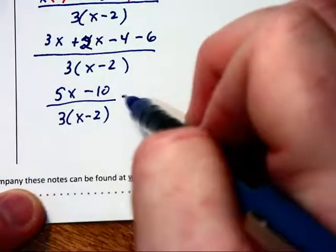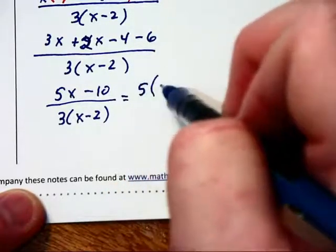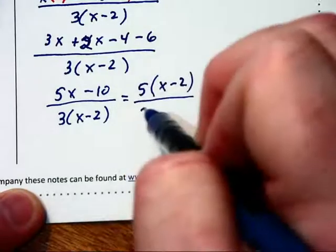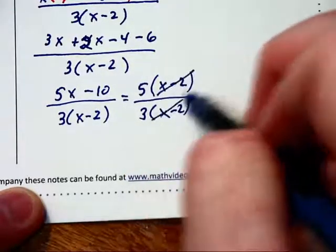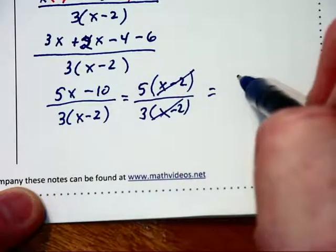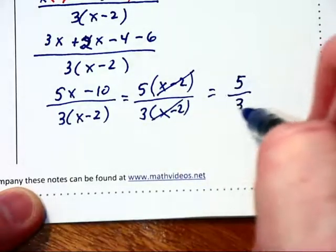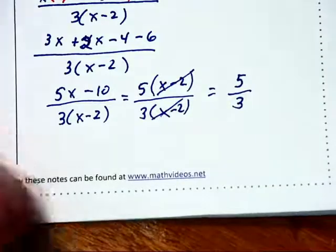We now see that a 5 will factor out and we'll have (x - 2) left over. And we can cancel the common factors of (x - 2) and say that this expression is equal to 5/3.